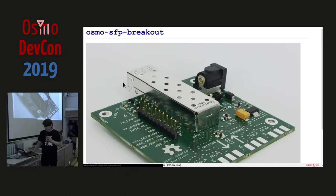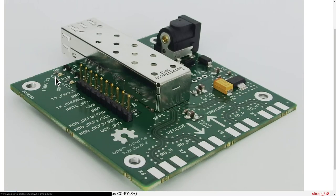Now we're coming to the new stuff — the Osmo SFP breakout board. Sylvain wanted to play with optical fiber in general to transmit signals. SFP transceivers are a commodity you can buy very cheaply on eBay, and the goal was to see what we could use them for other than transmitting Ethernet and plugging them into a switch. To play around with them we needed some way to interface with them, so those two boards were created.